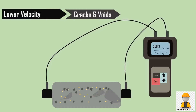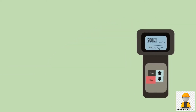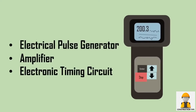The apparatus consists of an ultrasonic device which is connected to a set of transducers. The ultrasonic device contains an electrical pulse generator, amplifier, and electronic timing circuit.